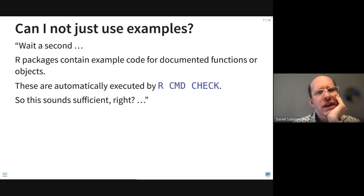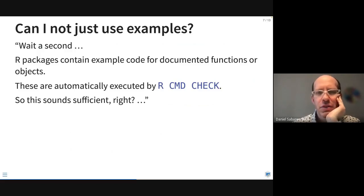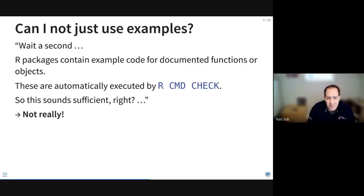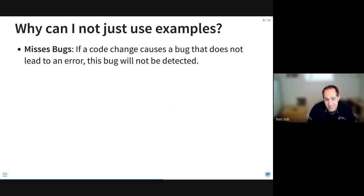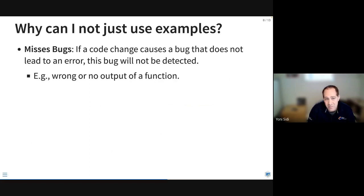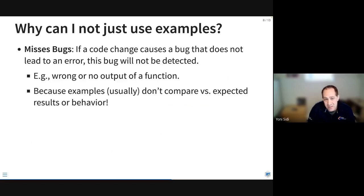Our packages typically include example code for documented functions, and these are automatically run by the R CMD check command — so isn't that enough? It only gets you part of the way there. Sometimes you can miss bugs if code changes and those changes aren't included in the example — they won't be detected. Things like no outputs or wrong outputs for a function won't be caught, because usually in examples we don't compare expected versus actual results; we just want to show that the function works.